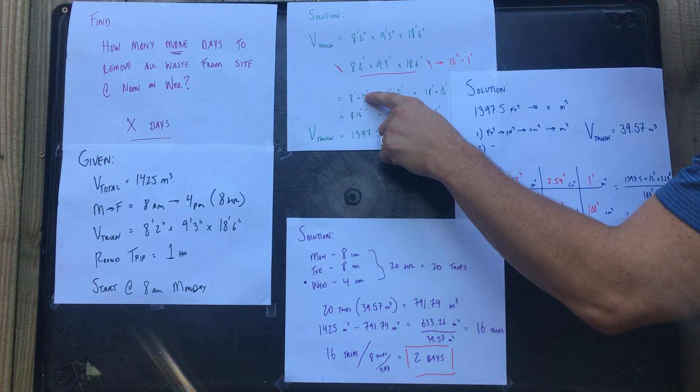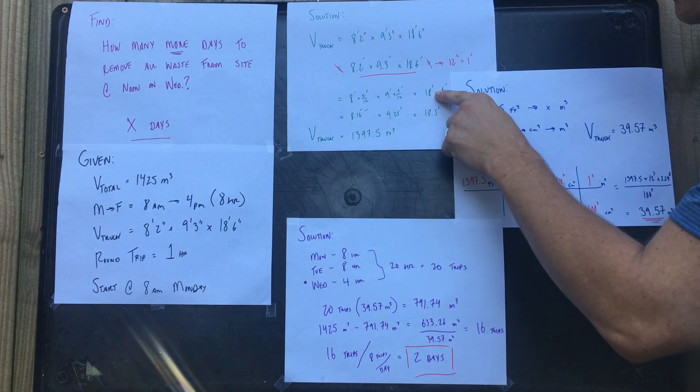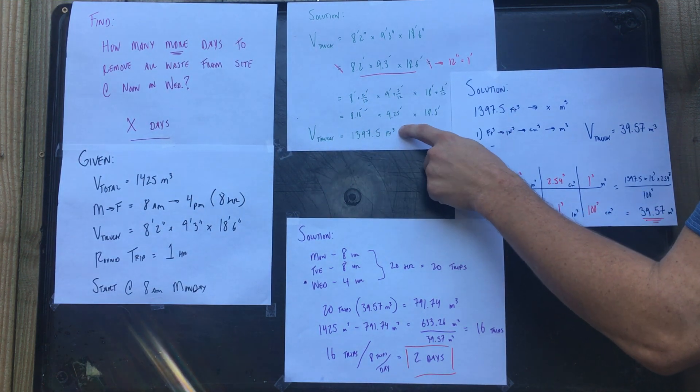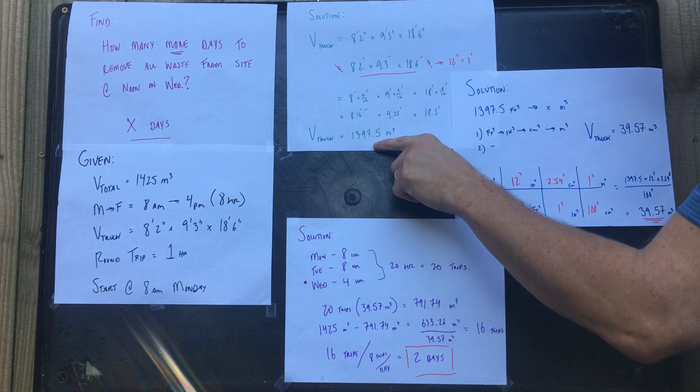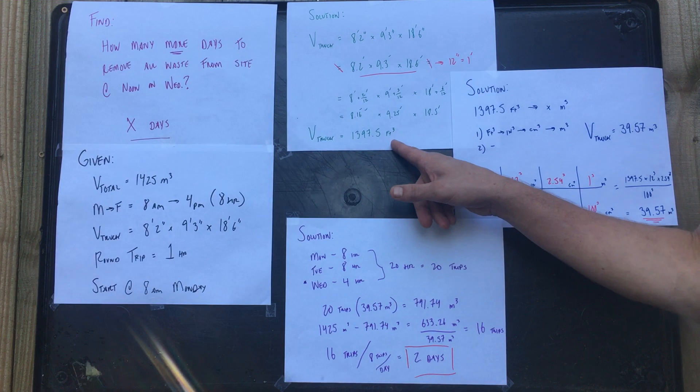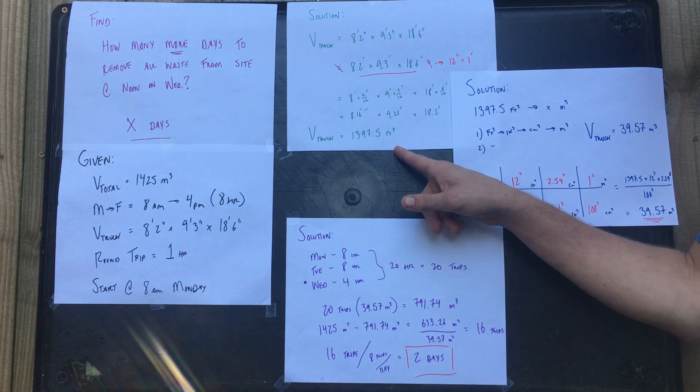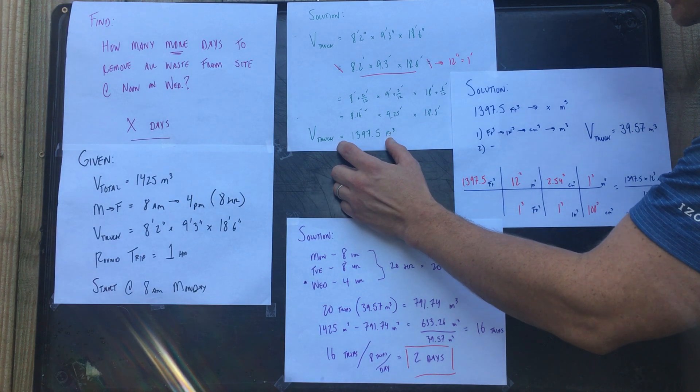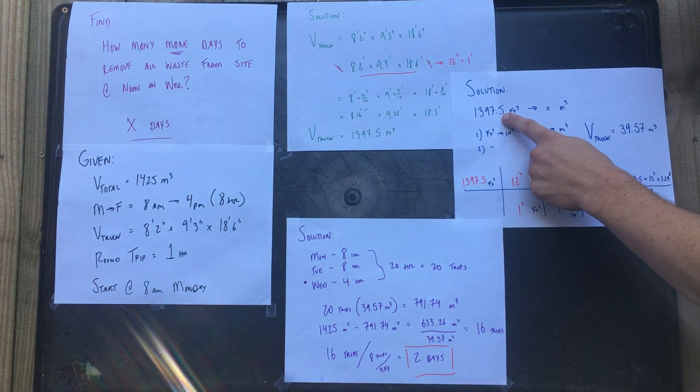When you pan that out, that's going to give you the decimal form. When you multiply up, that's going to be cubic feet (feet, feet, feet - three of them). So now that's the volume of the truck in feet. Now we need to use what we learned last week about converting dimensional analysis, take that 1397 and convert it.